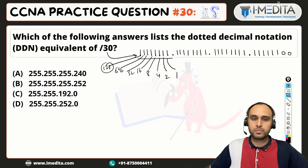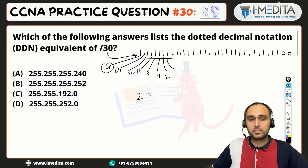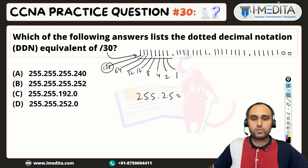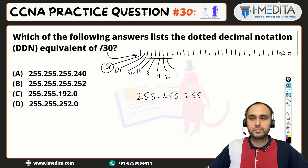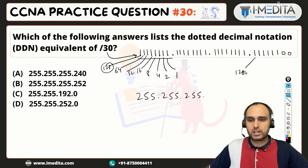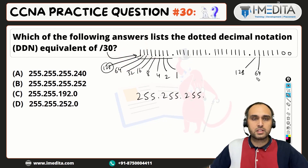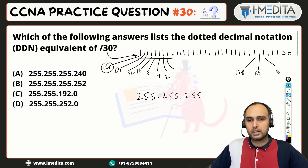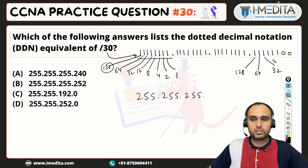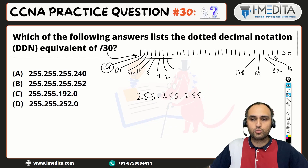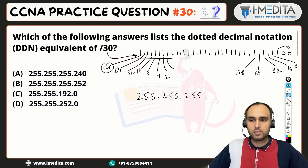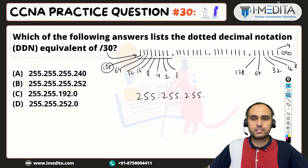So the first octet is 255, the second octet is 255, and the third octet is 255. For the fourth octet: 128 plus 64 is 192, plus 32 is 224, plus 16 is 240, plus 8 is 248, plus 4 is 252.